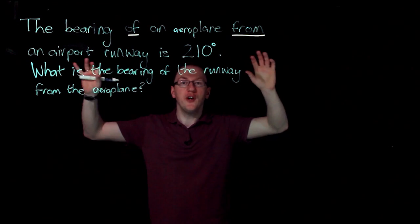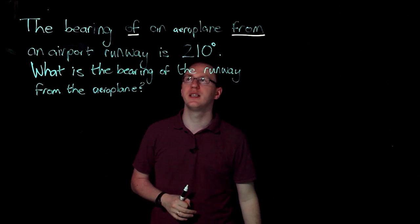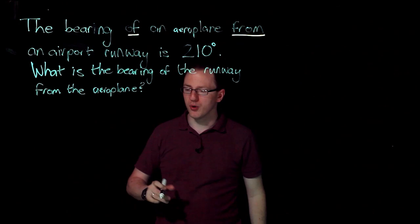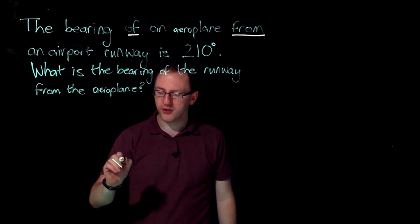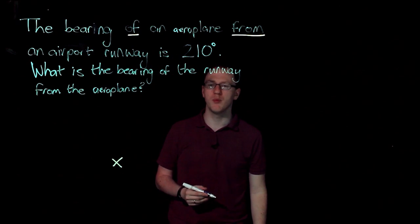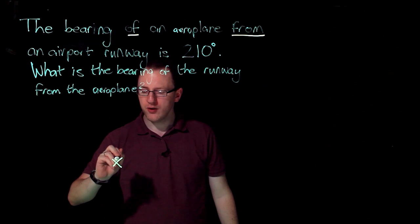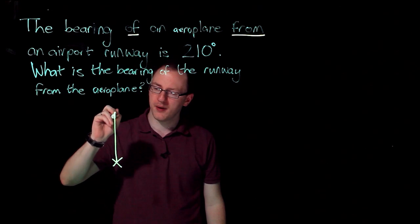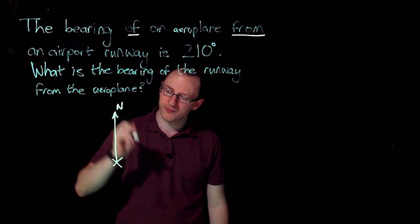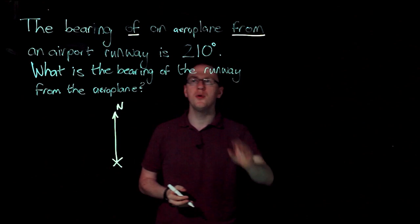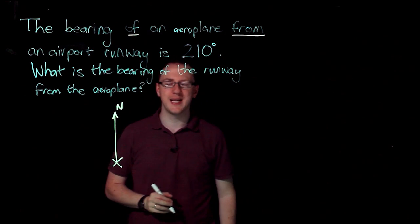I want to use the first sentence to draw a sketch. It's a bearing of an airplane from an airport runway. From is where I'm starting, so I'm going to mark that with an X to say that's where my runway is. I'm going to mark in north straight up. There's my north.